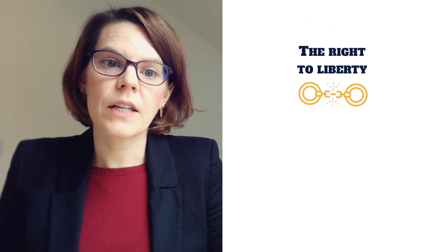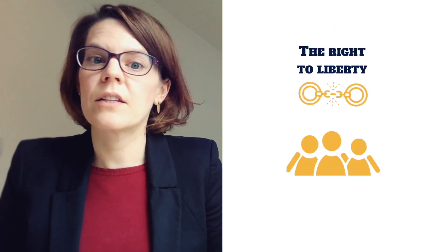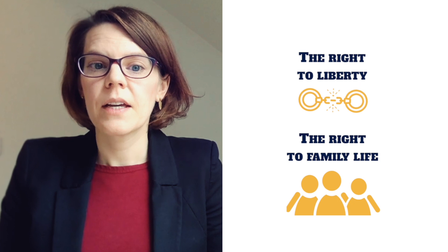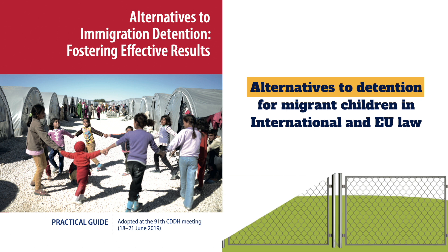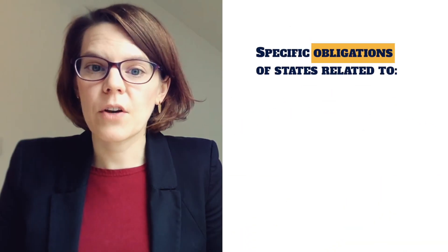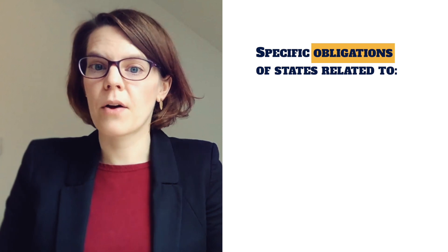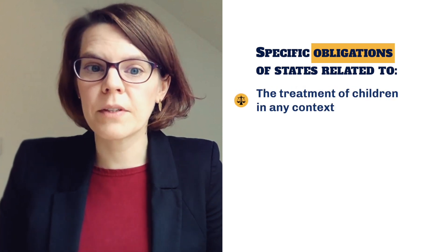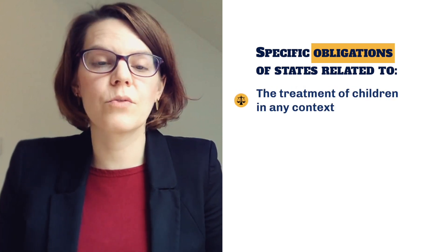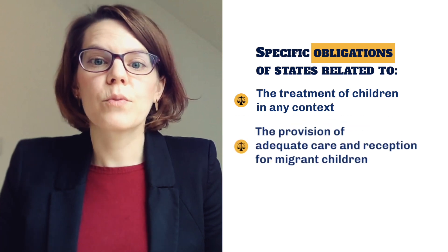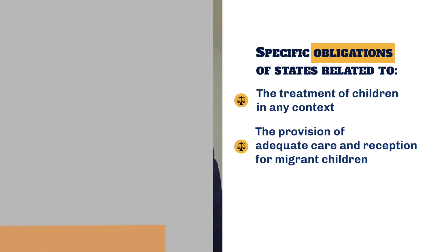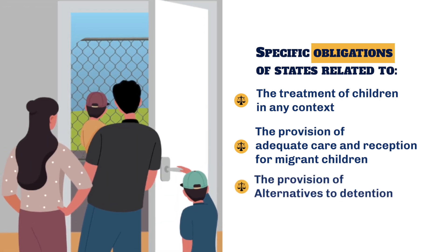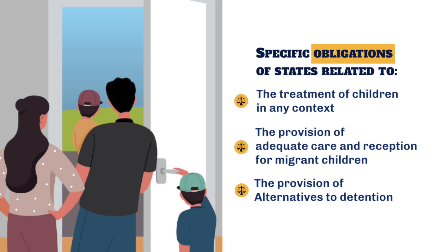The module also looks at the right to liberty and the right to family life. Finally, the second half of the module explores alternatives to detention for migrant children in international and EU law. There are specific obligations that states are bound to relating to the treatment of children in any context, including migration, and they are bound to the provision of adequate care and reception for migrant children. States are also legally obliged to provide for alternatives to detention.